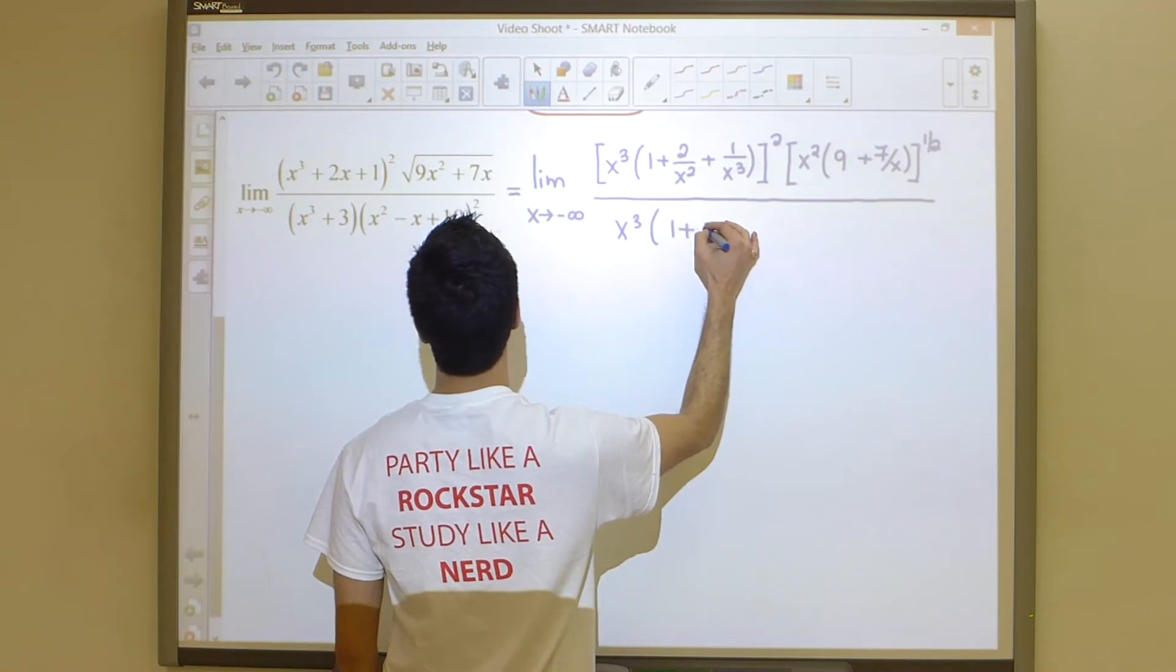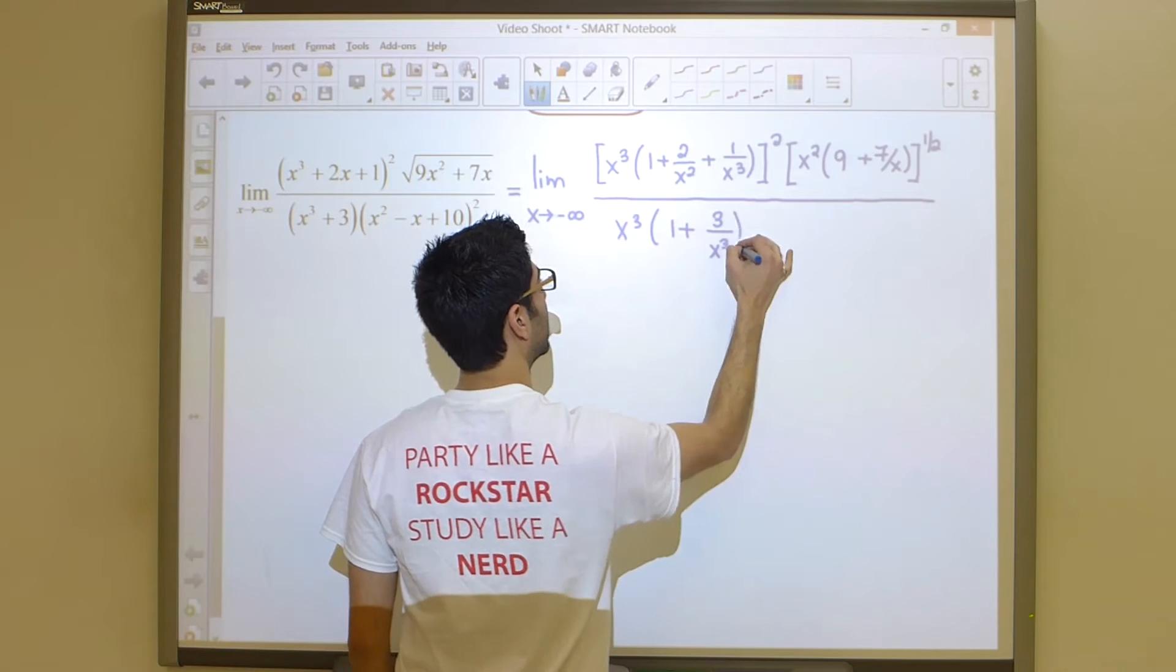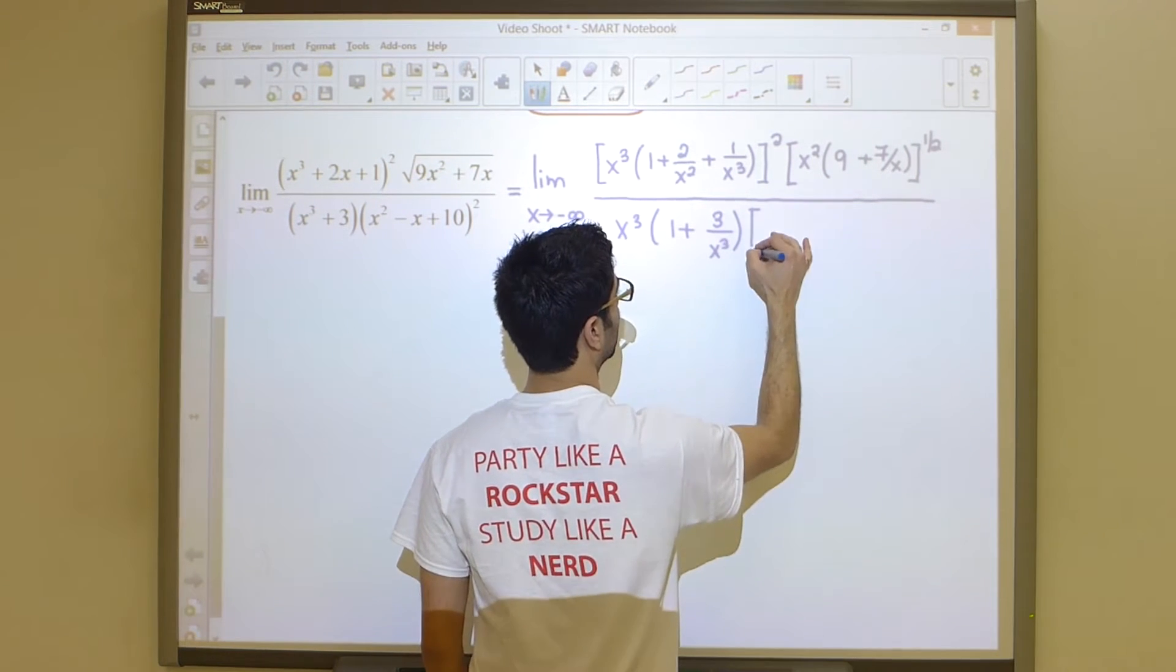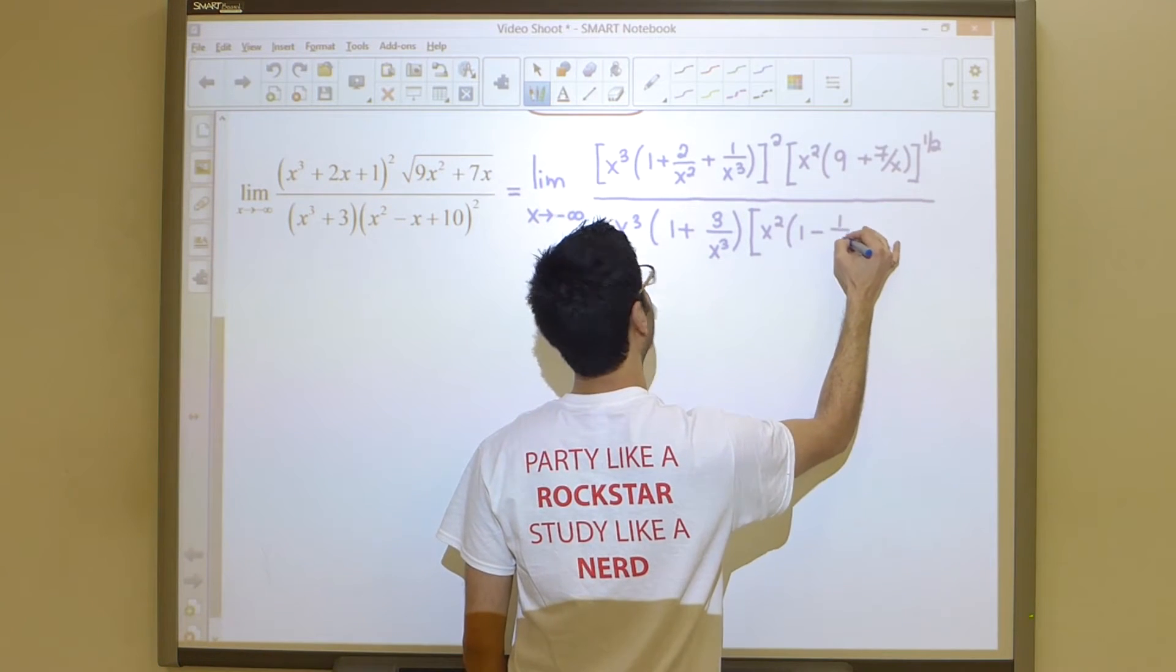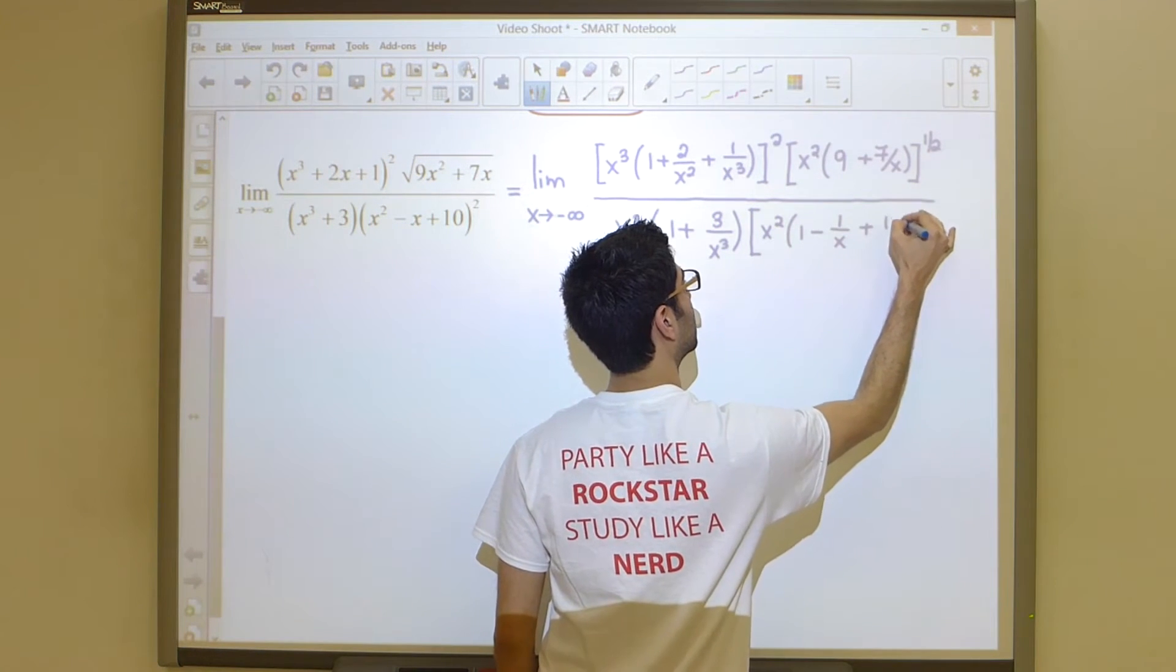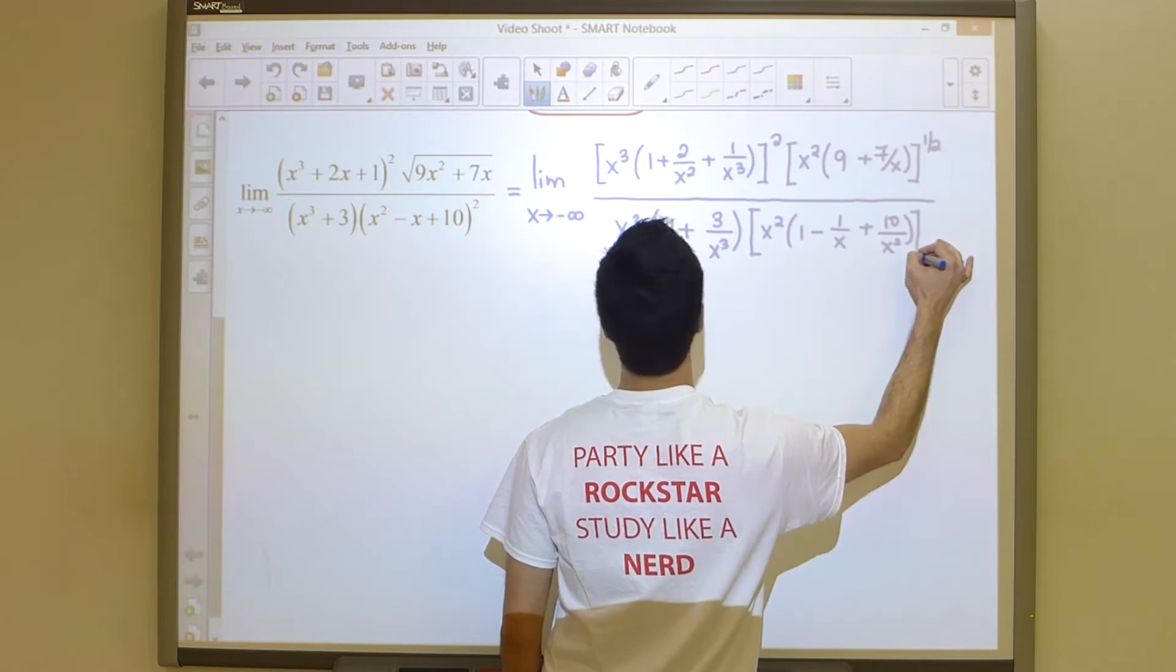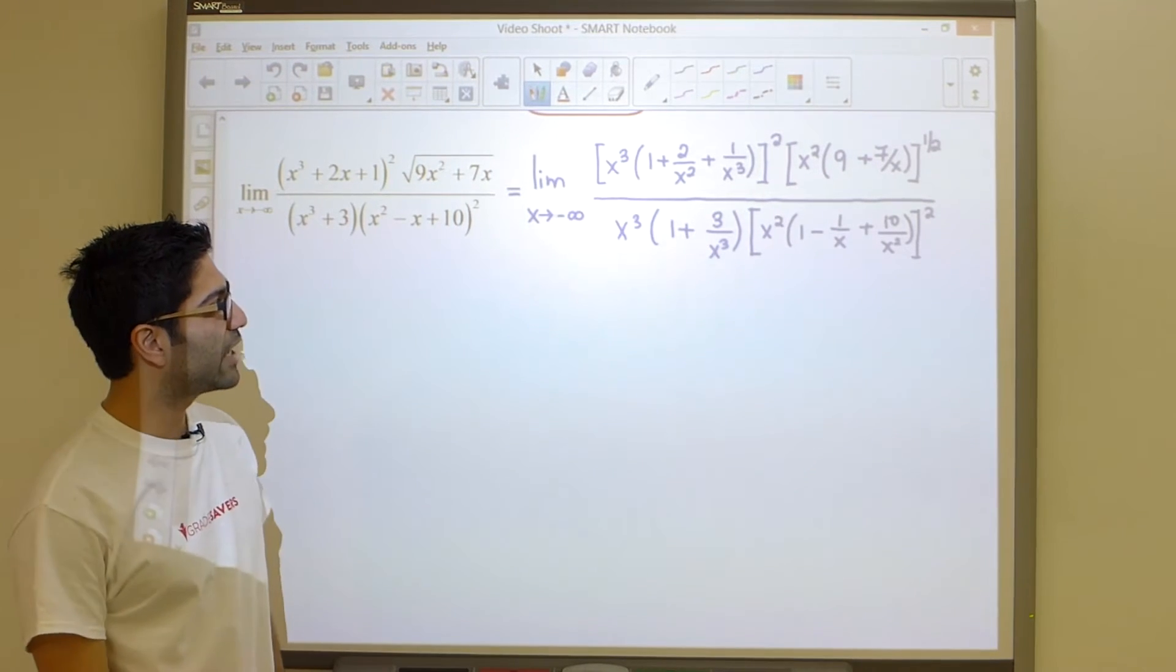Continue doing this process. Over here I can pull out an x cubed. I don't need square brackets because there is no outside power. And finally, in my last term I will pull out an x squared, leaving me with one minus one over x plus ten over x squared with an outside power of two.